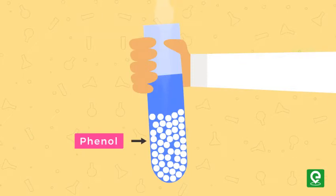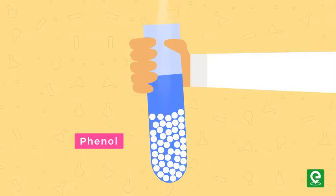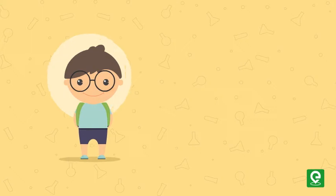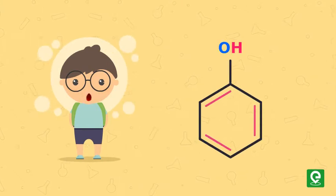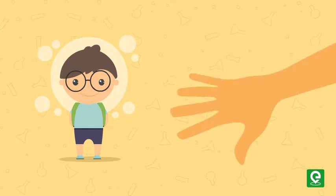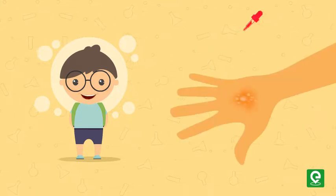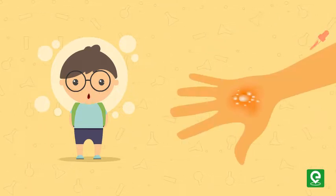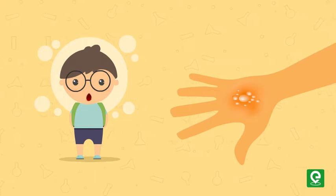Phenol is a white crystalline solid that is volatile in nature. Its molecule consists of a phenyl group bonded to a hydroxyl group. Phenol is mildly acidic and requires careful handling due to its propensity to cause chemical burns.